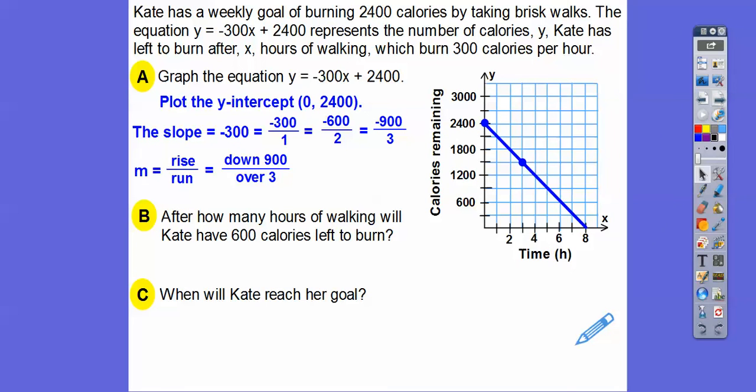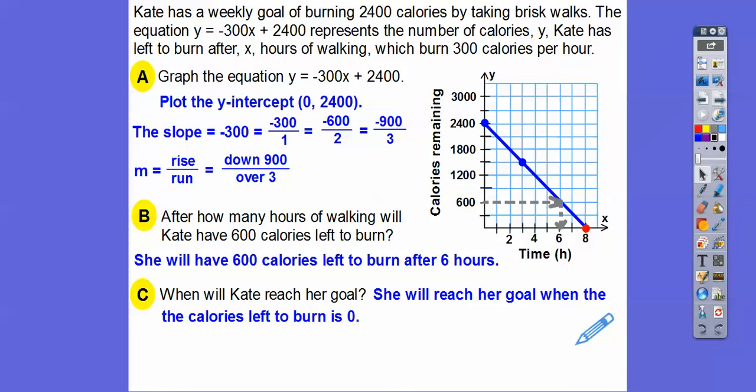And then so there it is right there. Now let's answer these questions. So how many hours of walking will Kate have burned 600 calories left? So here's calories right here. So what we've got to do is after how many hours. So if we just go over to our graph right there, after how many hours it's going to be after 6 hours, she'll have those 600 calories left. So if we just go over and down, when will Kate reach her goal? She'll reach her goal when she has 0 calories left to burn, which is over here. Here's the calories here. So when will these calories be 0? After 8 hours right there. So she'll reach her goal when the calories left is 0. And then so that's after 8 hours.